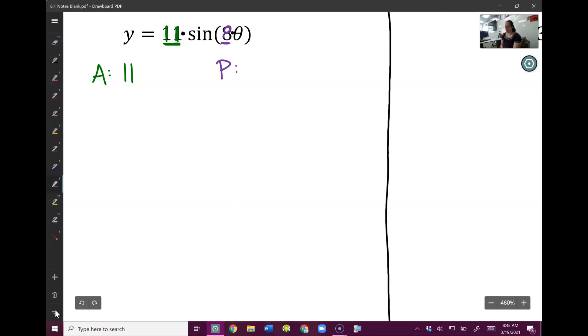And remember, for the period, we always do 2π divided by that number inside, which 2 eighths would simplify to 1π fourth.